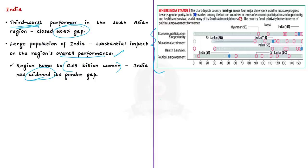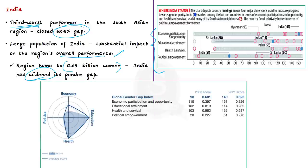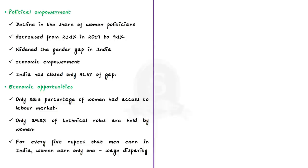India's regress has been notable in the political empowerment and economic opportunities dimensions. Particularly in the political empowerment dimension, the share of women ministers has decreased from 23.1 percent in 2019 to 9.1 percent. The decline in the share of women among ministers in some of the most populous countries is also a reason for the regional decline.